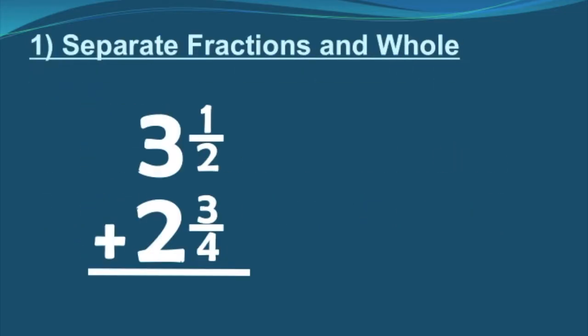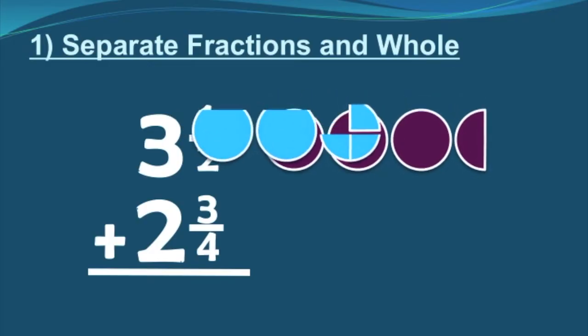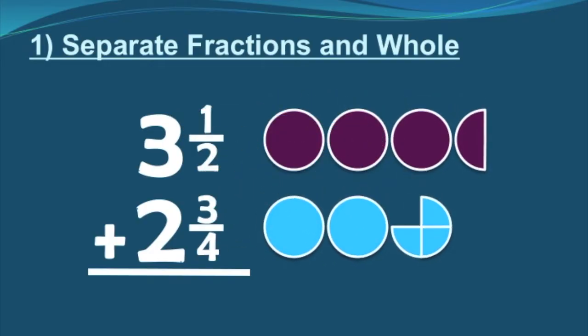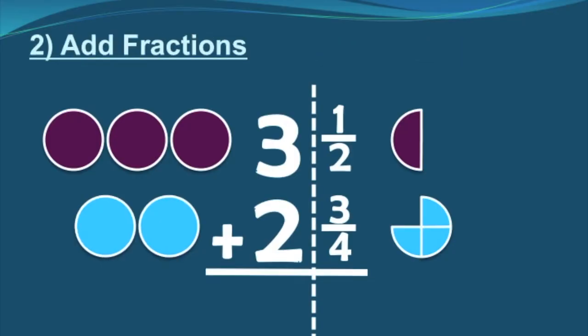Let's take a look at an example that has a visual representation. We've got three and a half plus two and three fourths. Step one says to separate the fractions and the wholes, so let's do just that. We'll bring the wholes to the left and keep our fractions on the right. Now we go to step two, which says to add your fractions — but we can't add these fractions yet. The reason why is because they don't have the same denominator.